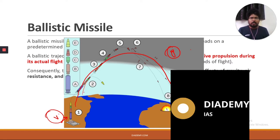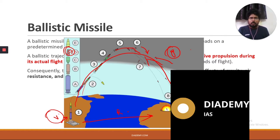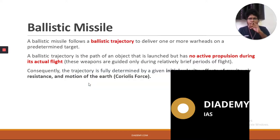A ballistic missile can also have multiple warheads. When the missile is released and comes back down through the atmosphere, these multiple warheads split and fall into different locations. We know the range and the target already, so we set the initial velocity accordingly, and the missile follows the projectile path to hit the predetermined target.